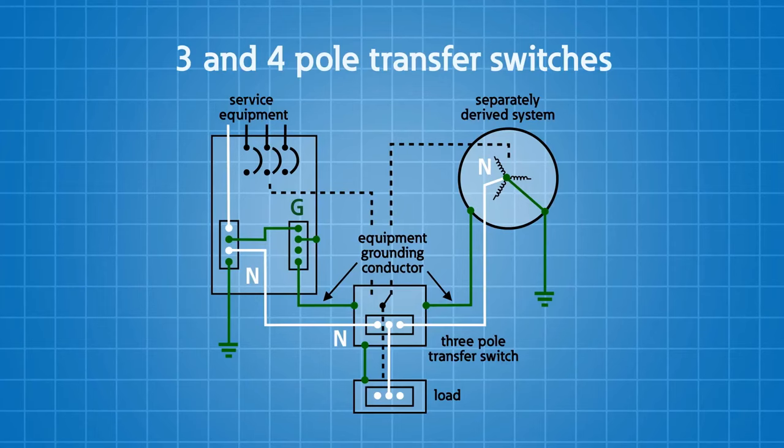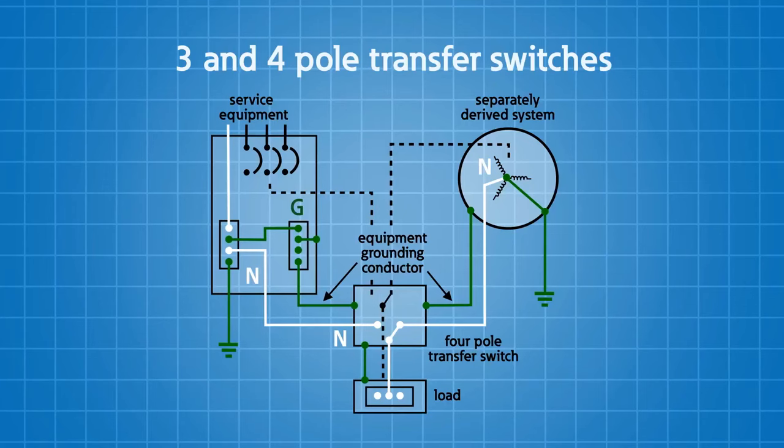A separately derived system implies that you would have a grounding electrode system and you would bond the neutral, the grounded conductor, in the generator with that system. If you have a separately derived system, the implication is that the transfer switch must switch the neutral with a four-pole transfer switch.